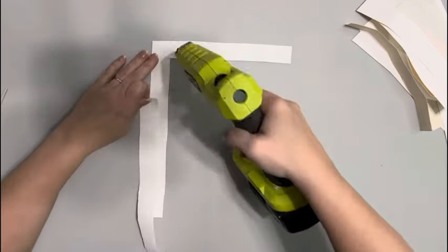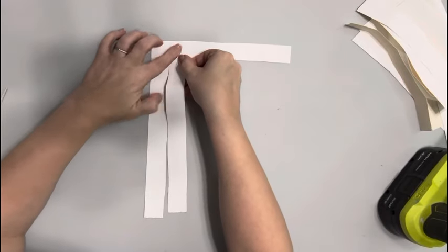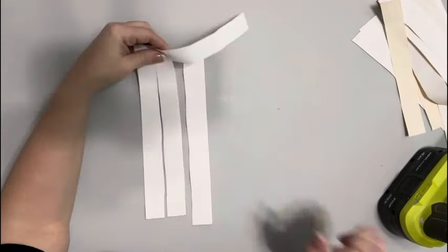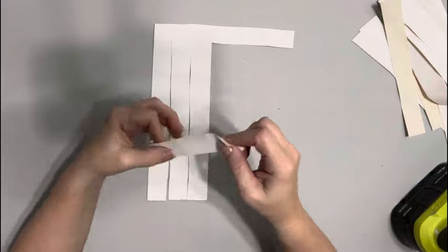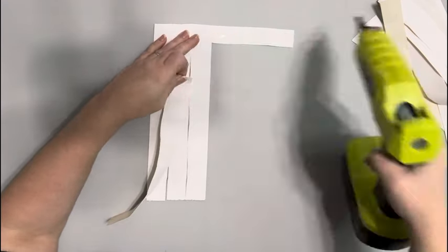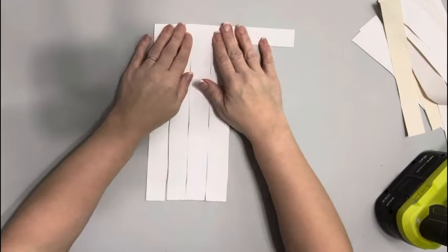And then take another long one and I'm hot gluing it on the top of the shorter one. The first one was underneath, second on the top, third one underneath, and it'll just go this way all the way across. Just alternating on top of the shorter canvas and then underneath.